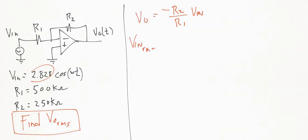So VN RMS is equal to 2.828 divided by the square root of 2. And that's 2 volts. Again, that's 2 volts RMS.